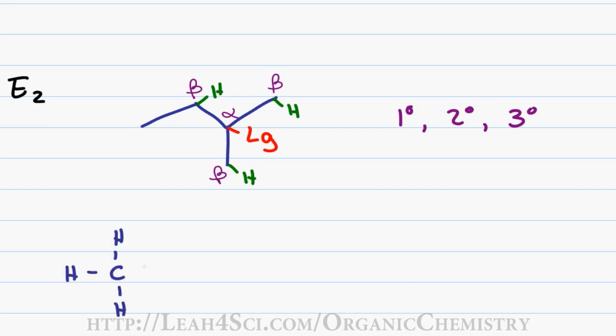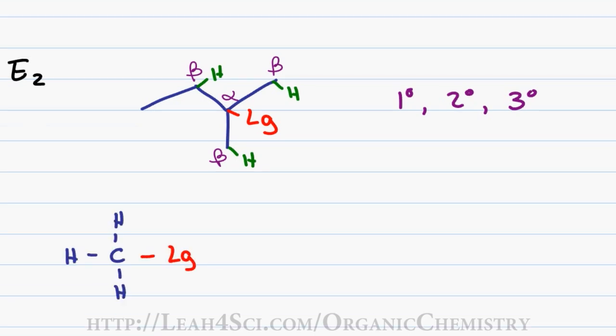However, an E2 reaction cannot take place when you have a methyl attached to a leaving group because even though the leaving group is on the alpha carbon, there is no beta carbon present to provide a beta hydrogen for elimination. This can also happen with a larger molecule. The carbon holding the leaving group is the alpha carbon, however the beta carbon is quaternary and therefore does not have a hydrogen that can be removed for the elimination reaction.